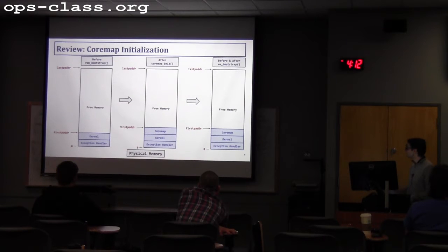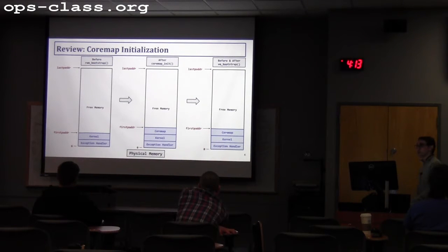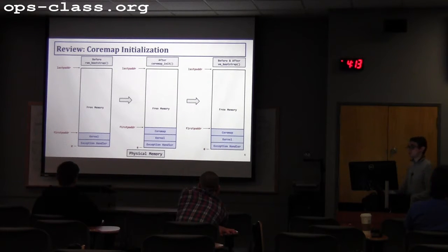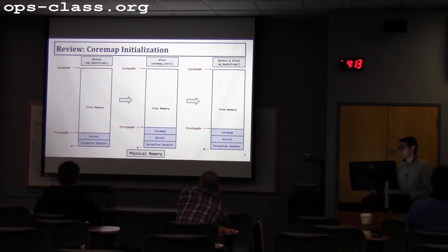You should end up with a physical memory layout without leaked memory. The exception handler comes first, then the kernel. Once we reach RAM bootstrap, we have these two regions in physical memory. Some people used to postpone the core map initialization into VM bootstrap — that's too late. From the time you start RAM bootstrap to the point where you call VM bootstrap, you'll leak memory because kmalloc calls alloc_kpages, which calls RAM steal memory. There is no way to retrieve such memory. So the best way to initialize the core map is before the very first kmalloc call.